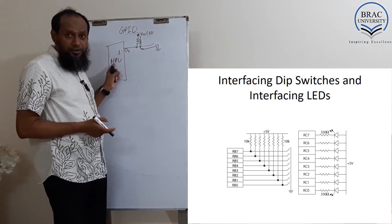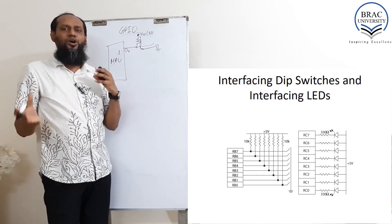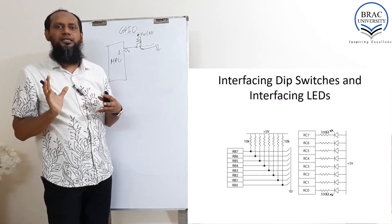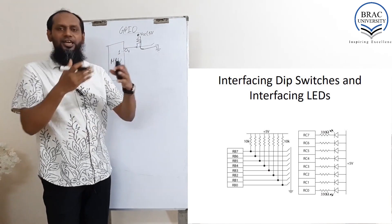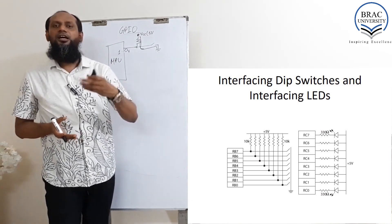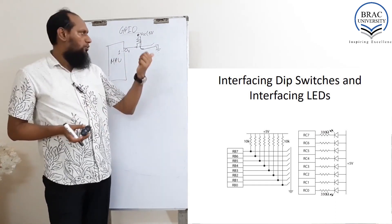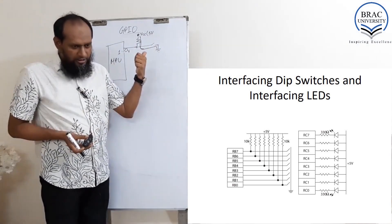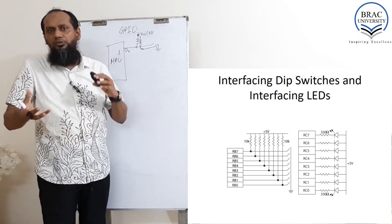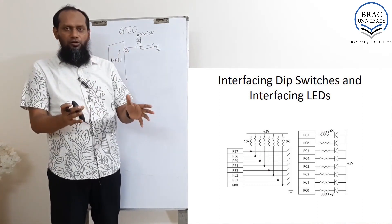For eight pins of a port — whenever we talk about a microcontroller, microprocessor, or IO, we usually use eight bits as a port. You can see port B is connected with the DIP switch and port C is connected with the LED. We can connect in this way and make a program so that when a switch is turned on, the corresponding LED will turn on, and when turned off, the LED will turn off. This is a very simple configuration of a DIP switch.